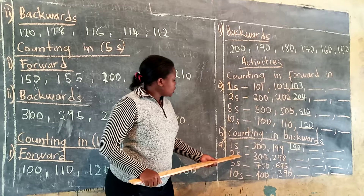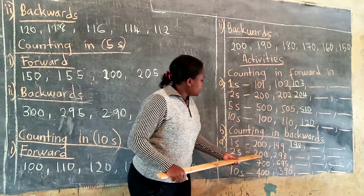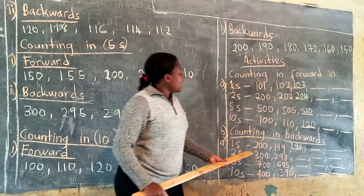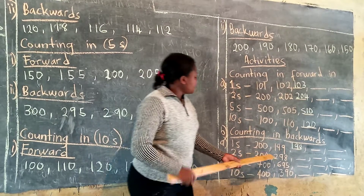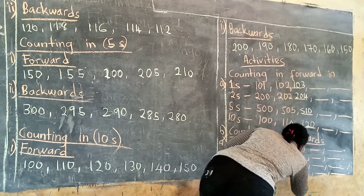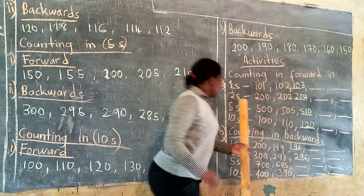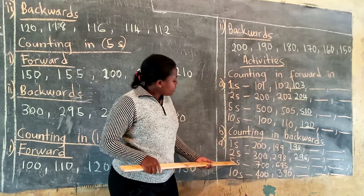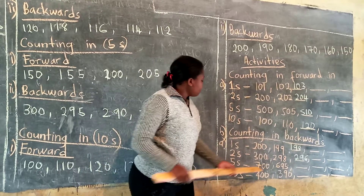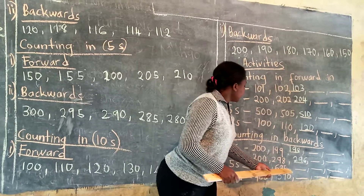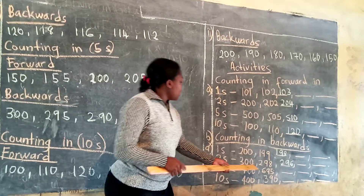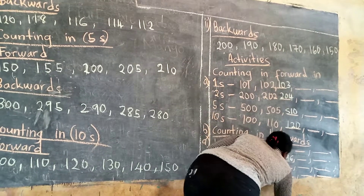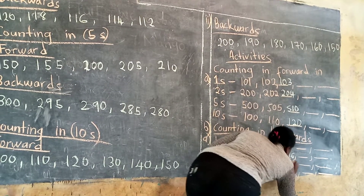Now in twos, counting backwards in twos. Starting at 300, you subtract 2, you get 298. Then 298 subtract 2, you'll get the next number, 296. Now in fives: 700 minus 5, you'll get 695. Then 695 subtract 5, you'll get 690.